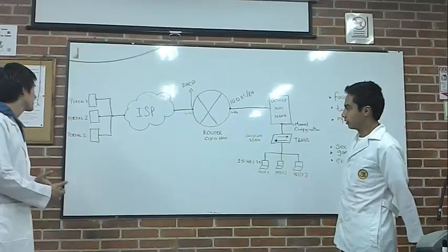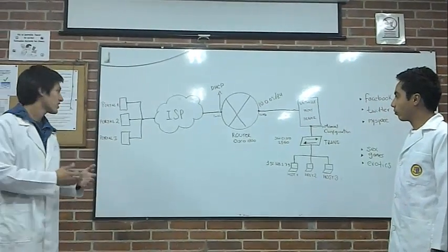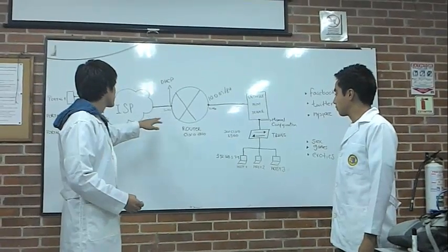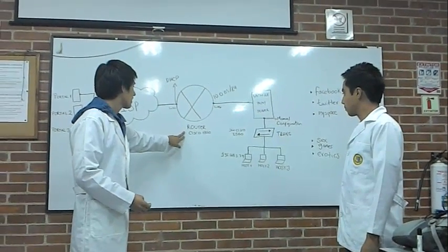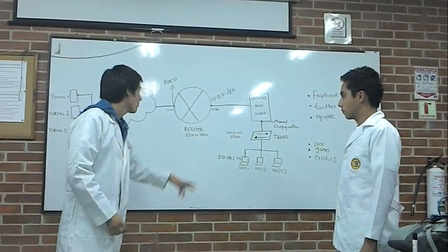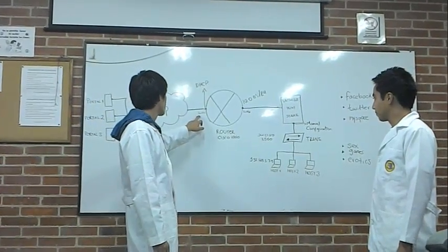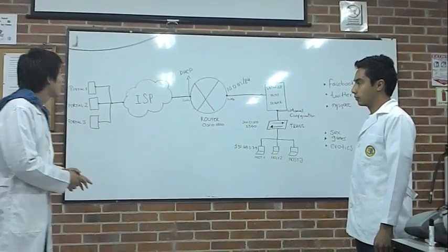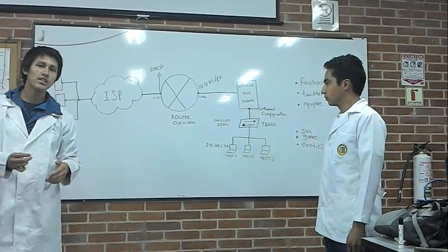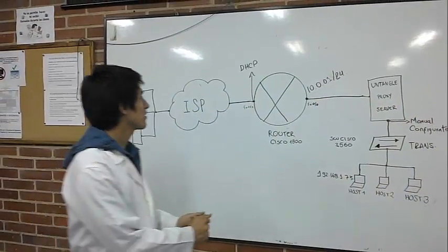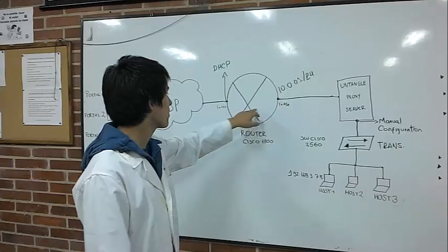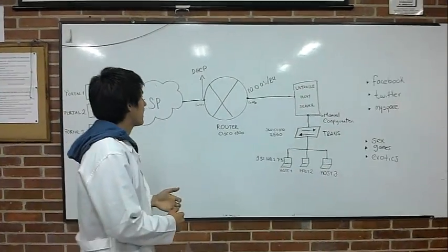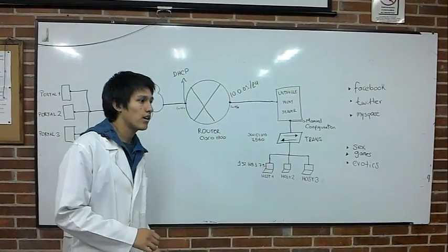First, we explain the portals that contain pages like Facebook, MySpace, or Google. This is our internet connection, and the first connection is with the router. We use the Cisco 1800 router and the configuration of this interface is in DHCP, because we have taken the address from the DHCP server of the university. After, we configure the next interface of the router and assign the address 10.0.0.0 for that network.